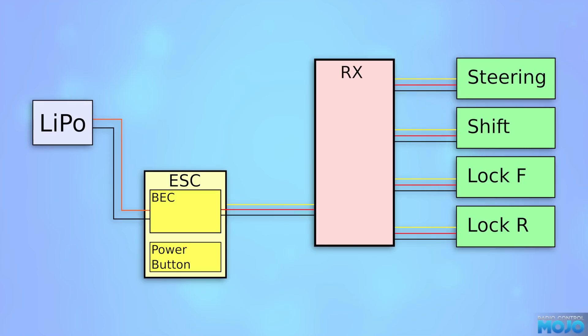So here we have a representation of the TRX4 as Traxxas intended. We've got the main battery, a LiPo in this case, hooked up to the ESC. The ESC has a built-in BEC that takes the 7.4 or so volts from the battery and converts it to the 6 volts the radio and servos want to see. It's a good simple setup that, as long as you don't go silly with the servos, works a treat.